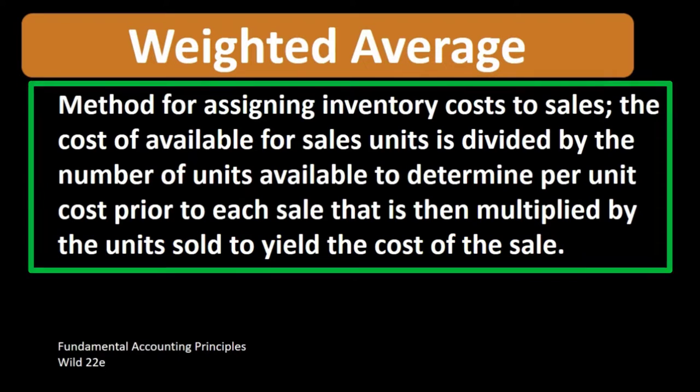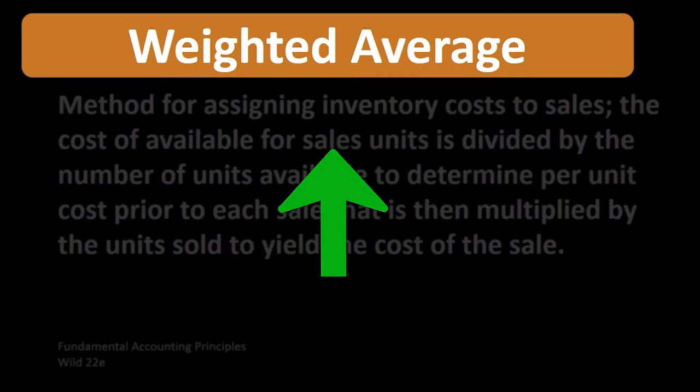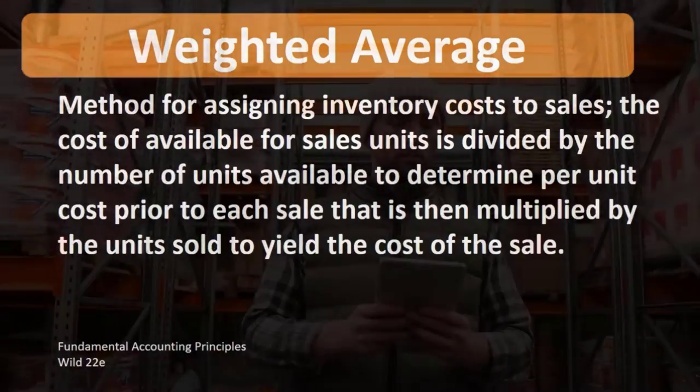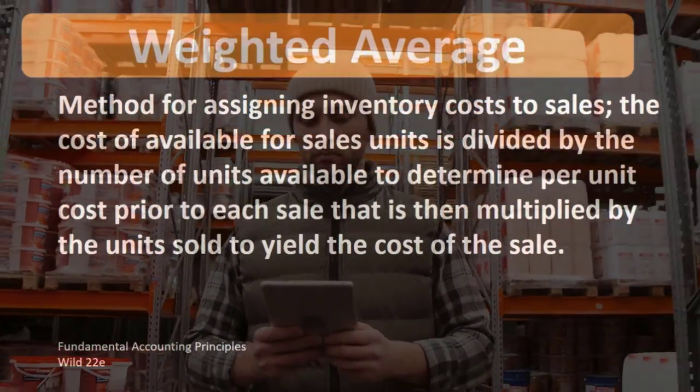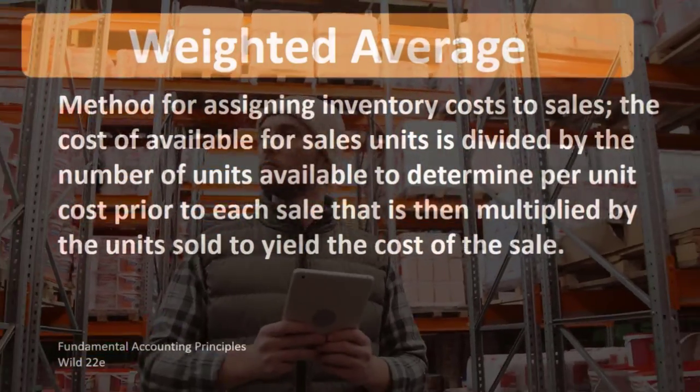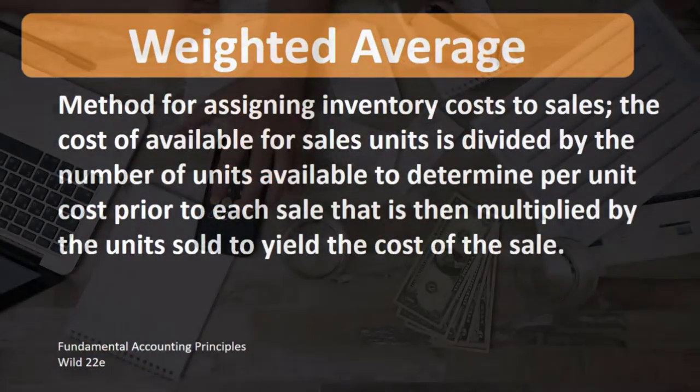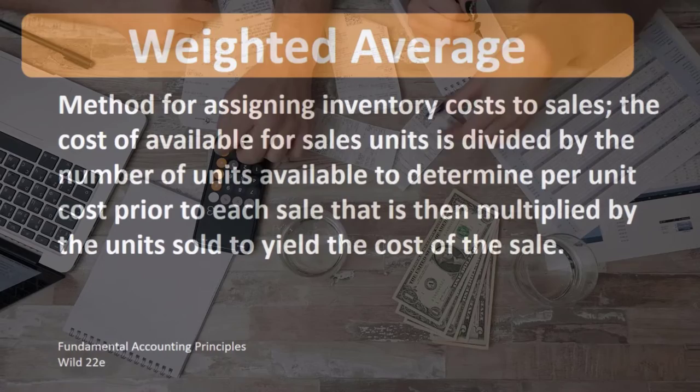That's a bit long because we're describing the actual calculation here, but the average cost flow assumption, the average method is a cost flow assumption method, meaning we're trying to value the inventory, the inventory that we are then going to sell. We're not going to be using specific identification. We're going to use some kind of estimate, some kind of cost flow method.